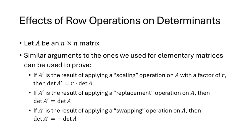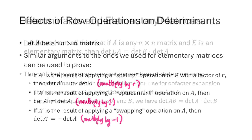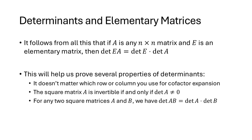Similar arguments can be used to understand the effect that applying a row operation to a general matrix A has on its determinant. Scaling a row multiplies the determinant by r; a replacement operation leaves the determinant unchanged; and swapping two rows negates the determinant. Notice that these factors match the determinants of the corresponding elementary matrices. This means that when E is an elementary matrix and A is a generic n×n matrix, the determinant of EA equals the determinant of E times the determinant of A. This will help us understand several properties of determinants from lecture 26.